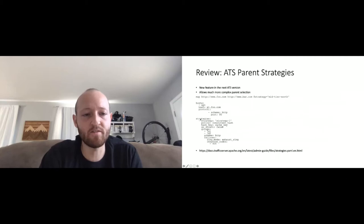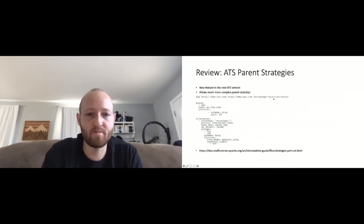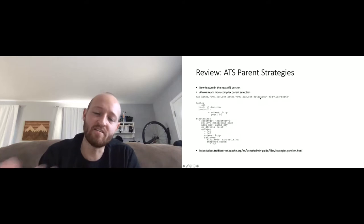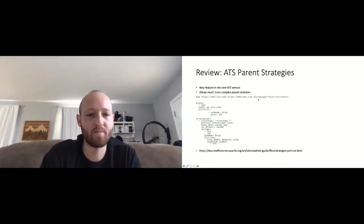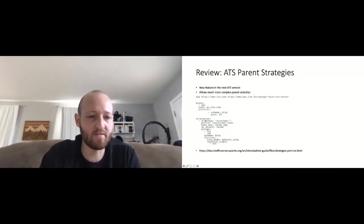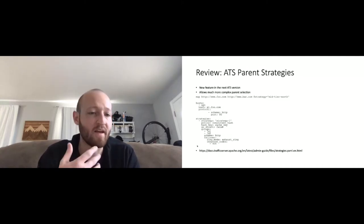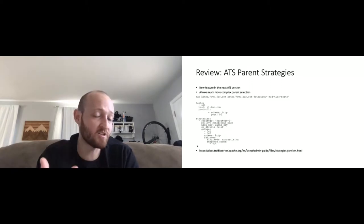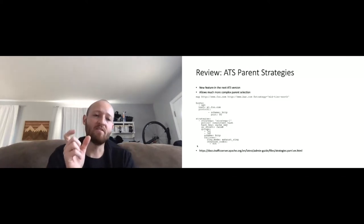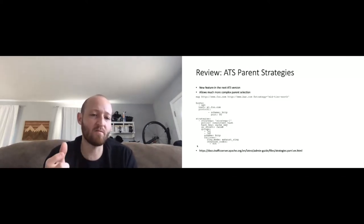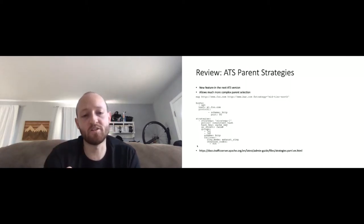Just reviewing quickly, the way it looks: you see this top remap line — map A to B — and then you have an @strategy to say this is the strategy I want this remap line to use. It's similar to @plugin, it's just @strategy. Then in your strategies.yaml file, you have the name of that strategy, the policy — consistent hash or round robin, and we might add more in the future. The hash key can be an arbitrary cache key if you want to use a custom hash rather than the traditional origin FQDN hash.